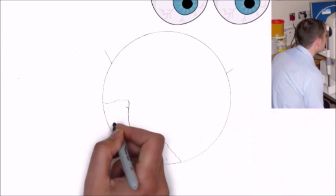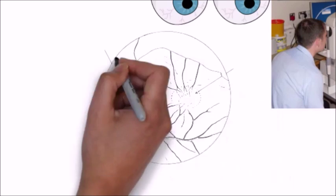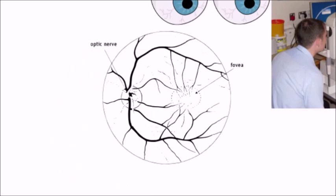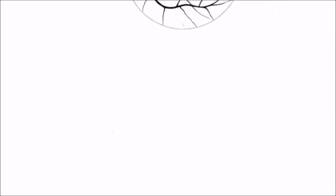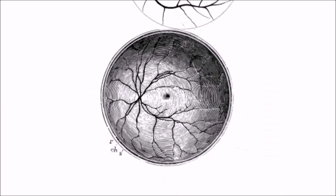What these scans reveal is the unique pattern of blood vessels at the back of the eye. People have been looking at the pattern of blood vessels for a long time. This is a textbook drawing from the 1880s of the kind of pattern which you're going to become very familiar with by looking at photographic scans.